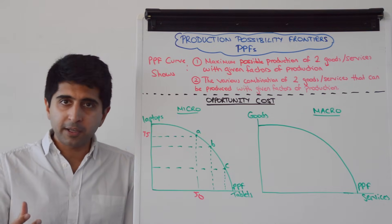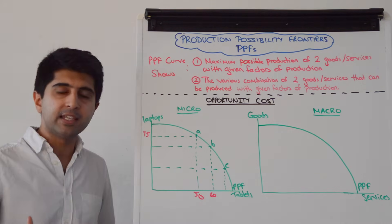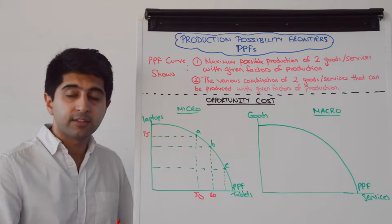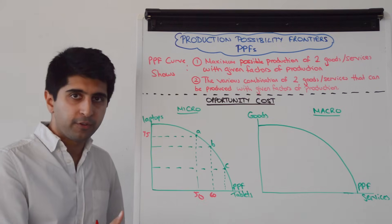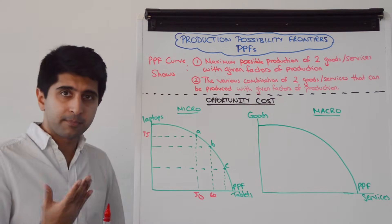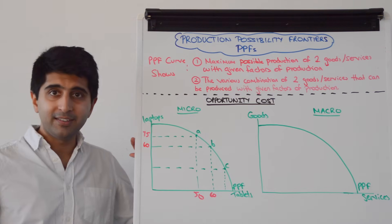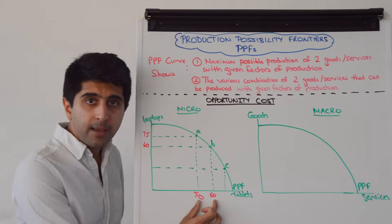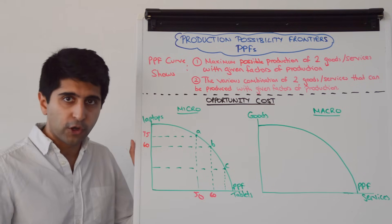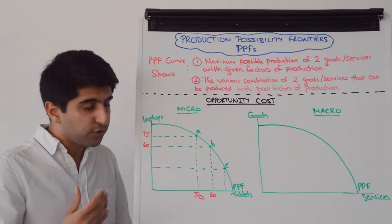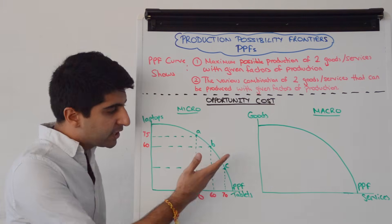Let's say this firm is currently producing at point A, giving a combination of 50 tablets and 75 laptops. If they want to specialise and increase tablet production from 50 to 60 — reallocating factors of production — as they move from point A to point B they produce 10 more tablets but have to give up 15 laptops, going from 75 down to 60. That's the opportunity cost.